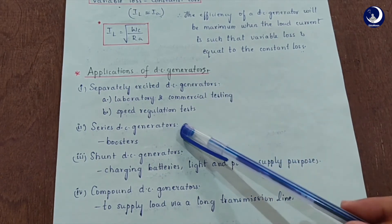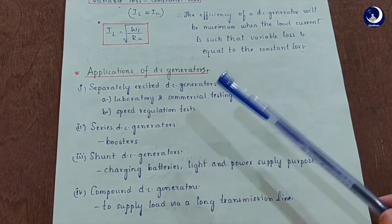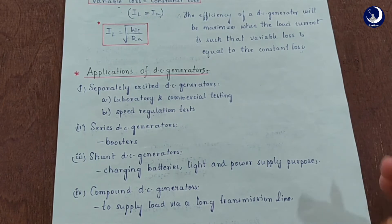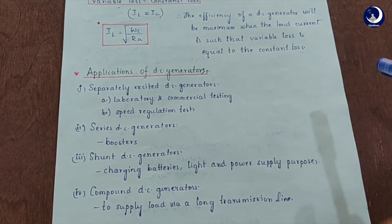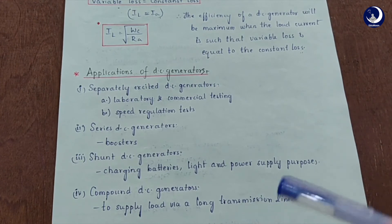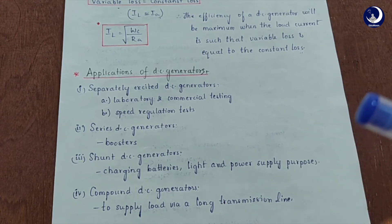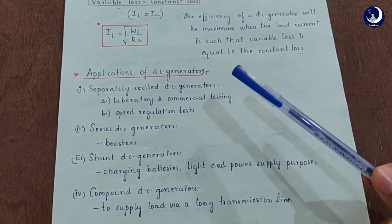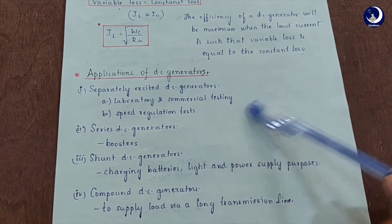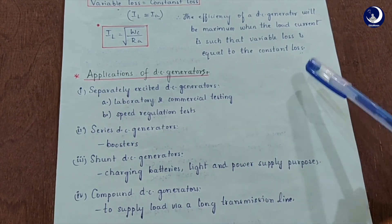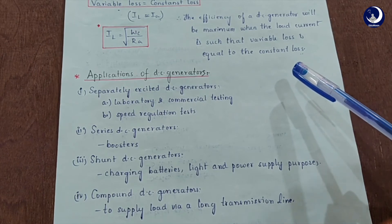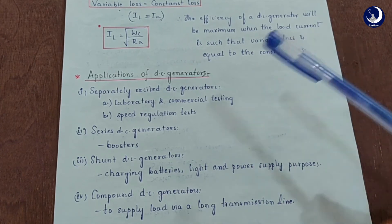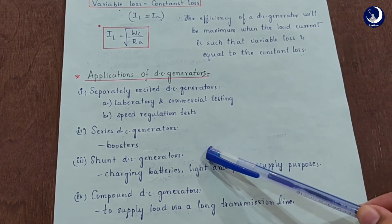The series DC generator has limited applications. Its rising characteristic makes it suitable for voltage-boosting purposes, and it is used in boosters. Since a series generator has the tendency to supply constant load current, several series generators can be connected in series to provide high-voltage DC power transmission at a constant current.